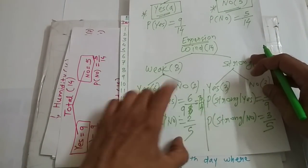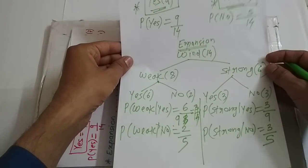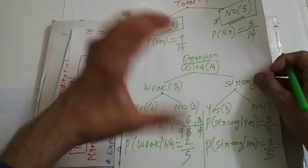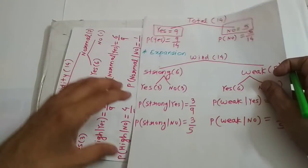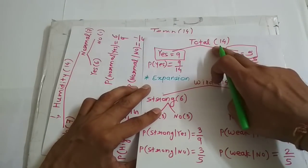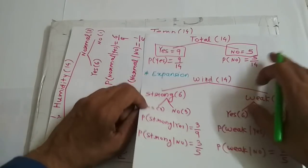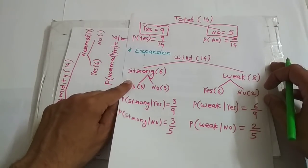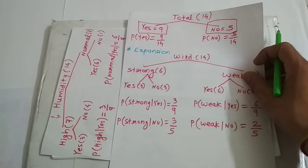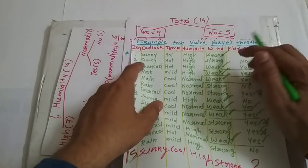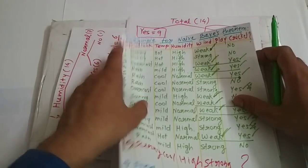This is the expansion for the wind attribute. We have expanded wind and found the probability values. The total 14 records are divided into 9 yes and 5 no. We have calculated the probability of yes as 9 by 14, probability of no as 5 by 14, and the wind expansion gives us these probability values. We are moving from right to left, and we are done with wind. Now we will move to humidity.